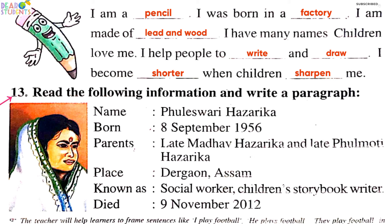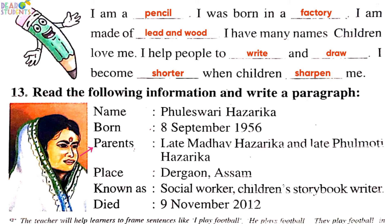Read the following information and write a paragraph. The name is Fulessori Hajarika, born 8 September 1956. Her parents were named Madhav Hajarika and Fulmoti Hajarika. She is known as a social worker and a children's story book writer. She died on 9 November 2012.